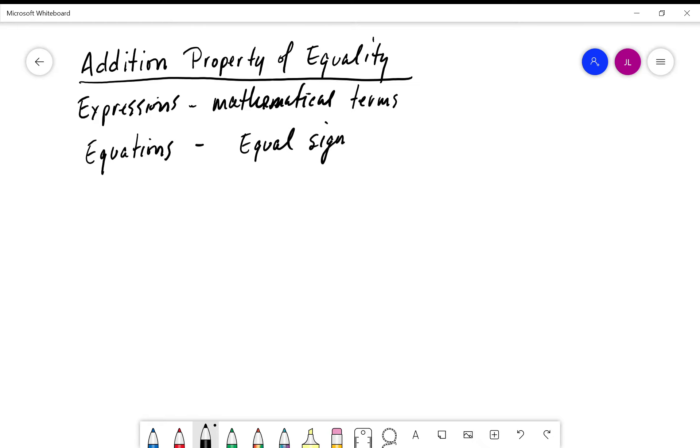When we talk about the addition property of equality, the way we want to put this mathematically, we would say if a, b, and c are real numbers, so they're not imaginary or anything, real numbers. What we're saying then is that when a is equal to b, so a and b are the same.